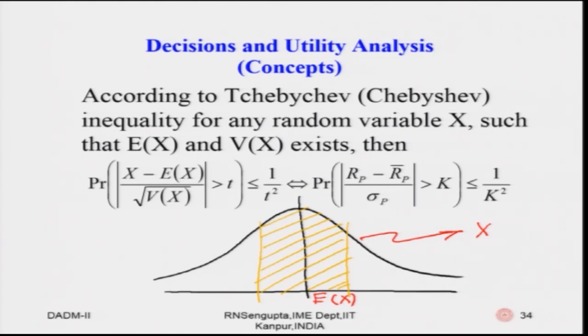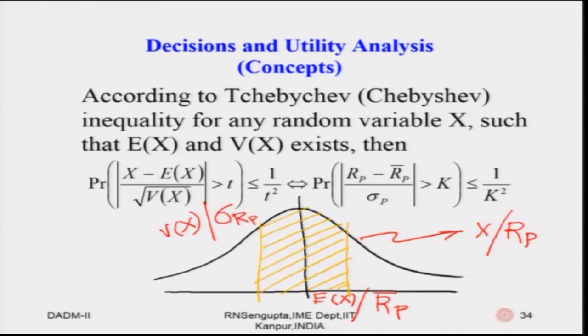What I do is replace x by R_p, E(x) by R̄_p, and V(x) by σ(R_p). I consider a threshold value k, so the probability that the normalized distance |(R_p − R̄_p) / σ(R_p)| is greater than k is always less than or equal to 1/k². Higher or lower values of k will dictate the so-called normalized length based on which you can take this decision.